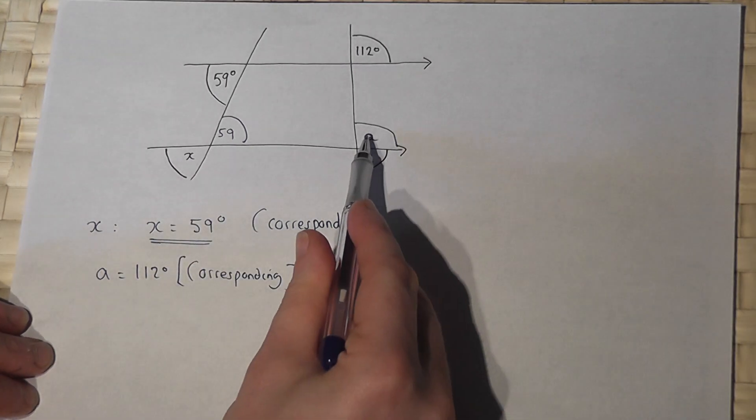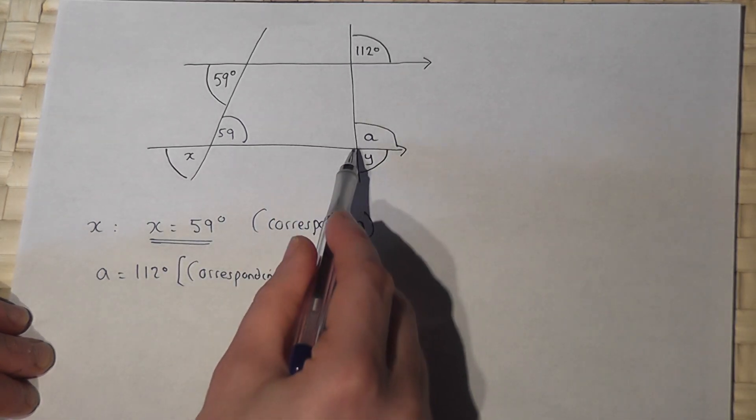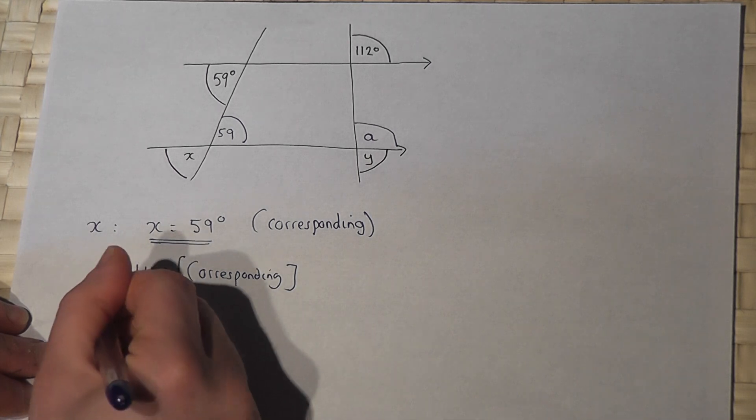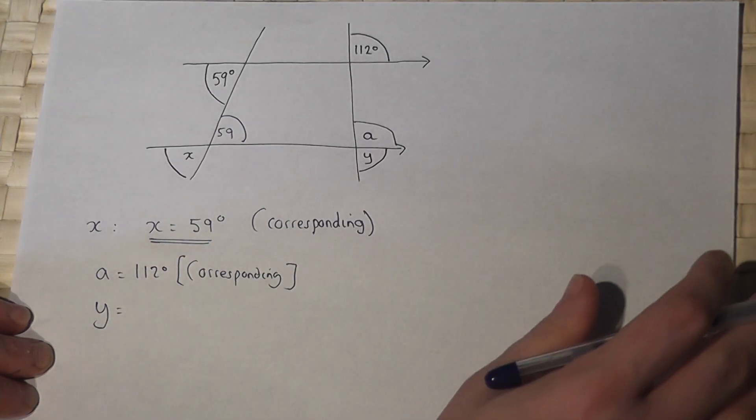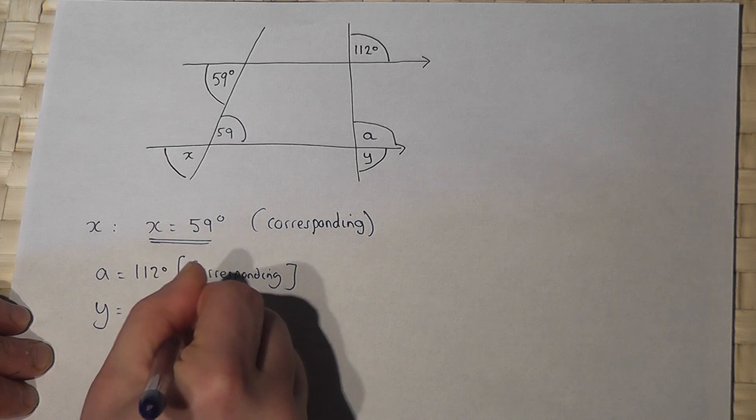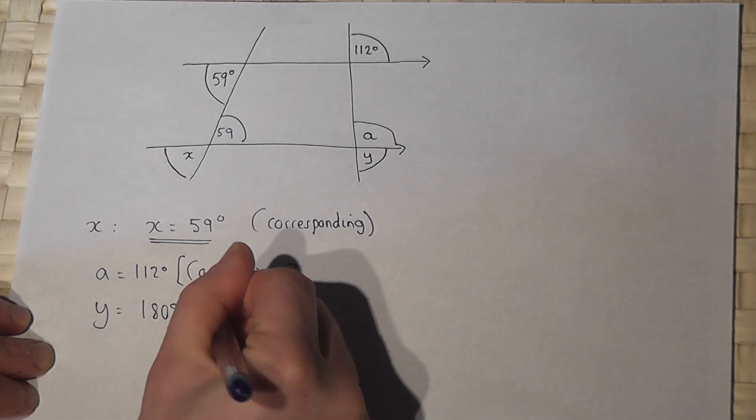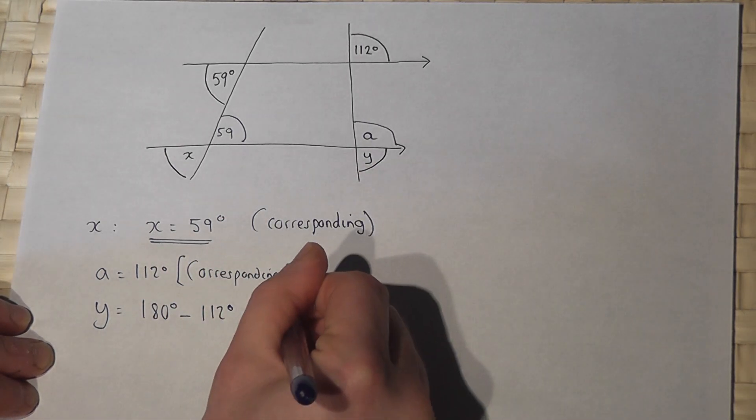Now then, because A and Y are on a straight line and together at the same point, then to find Y I would just do 180 degrees for the straight line and take away angle A, which is 112 degrees, which gives me 68.